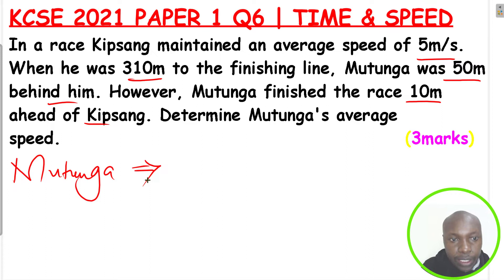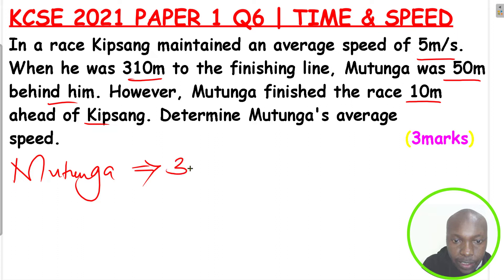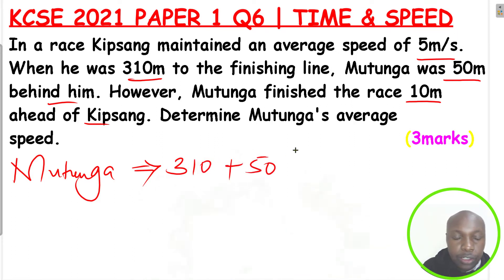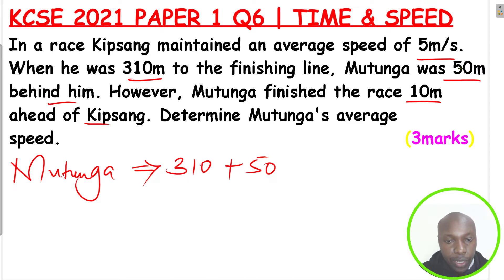There is something here that is going to assist us. When Kip Sang was 310 meters to the finishing line, Mutunga was 50 meters behind. For Mutunga to recover this distance, he had to run a distance of 310 meters plus 50 meters. The reason we are adding 50 is because Mutunga was 50 meters behind Kip Sang at that point, so he had to cover that extra distance.